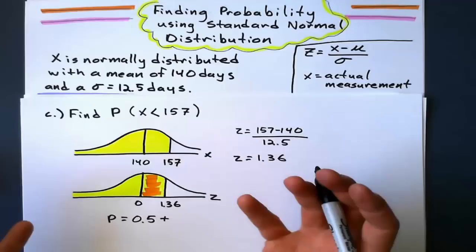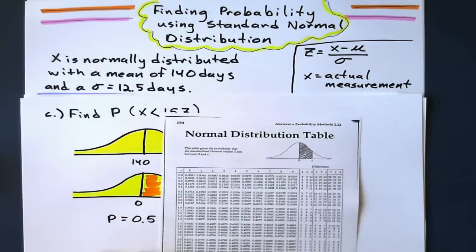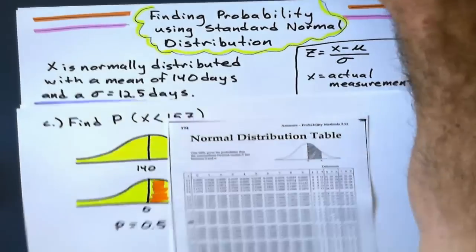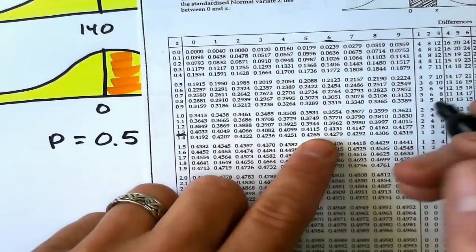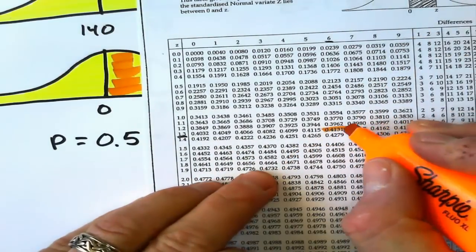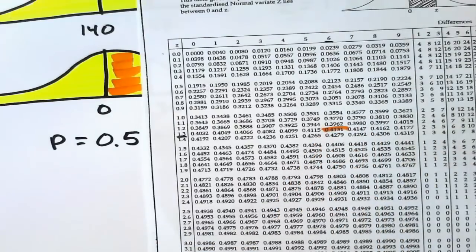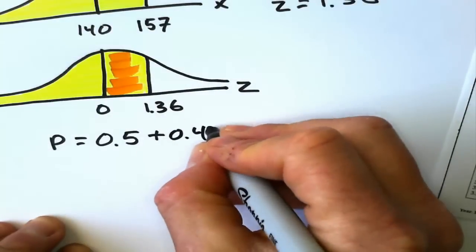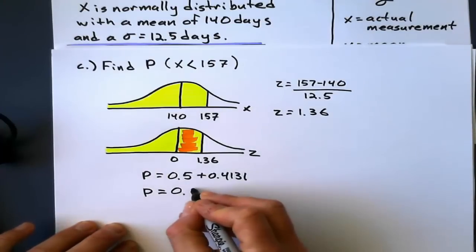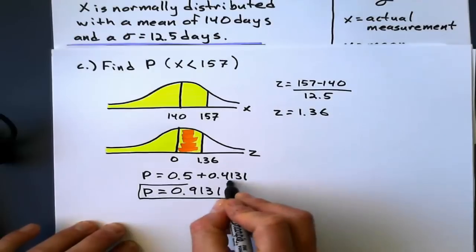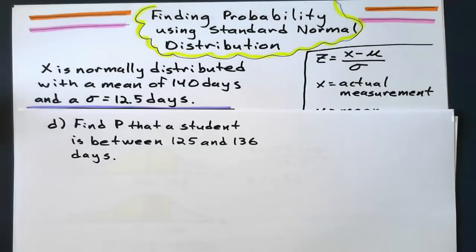So I look up 1.36 on the table, and what do I get? Let's see. There's 1.3, and I get a closer look. 1.3, 1.36 is right there. Scroll down. Looks like, there it is, 0.4131. 0.4131 is what I add on to 0.5. And it's not drawn to scale. Probability equals 0.9131. There we go.